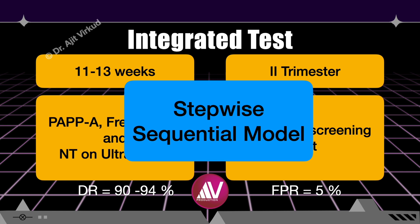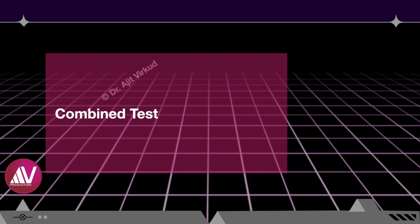The stepwise sequential approach involves reporting the patient's first trimester screening test risk, which allows for earlier management options. If the first trimester test result is higher than the lab-derived positive screening cutoff, a diagnostic test or NIPT can be offered and the screening protocol is discontinued. If the patient has a lower risk, she can be counseled and proceed to quad screening in the second trimester. This sequential screening has a detection rate of 91 to 93 percent with a false positive rate of four to five percent.